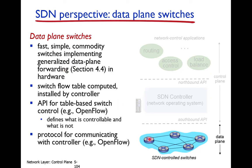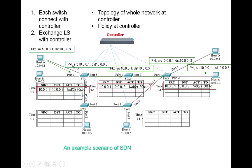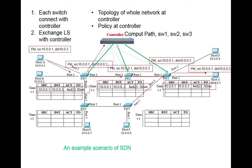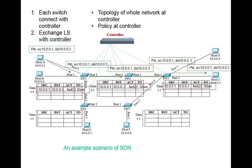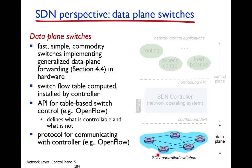Commodity switches implement generalized data plane forwarding in hardware. The switch flow table is computed and installed by the controller. Each switch has a flow table, and this flow table is computed by the controller — the controller computes the path and then installs it in the switches.